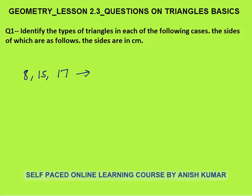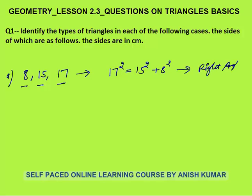Pause the video and try to find which kind of triangle it is. Now we know the Pythagorean theorem triplet: 17 squared is always equal to 15 squared plus 8 squared. So this triangle with sides 8, 15, and 17 is a right angle triangle.